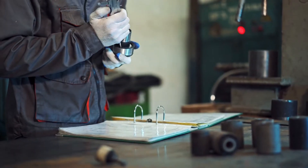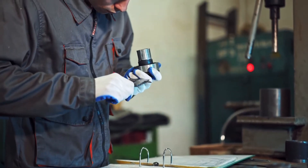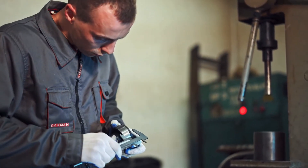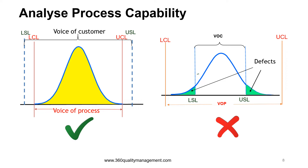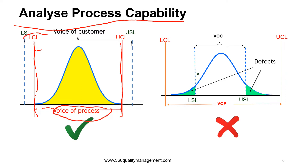We shall start by looking at process capability studies for variable or continuous process parameters to understand the fundamentals. This is an illustration of the concept for process capability. In this diagram, we have the voice of the process in red — the lower control limit and upper control limit — and we have the voice of the customer represented by the lower spec limit (LSL) and upper spec limit (USL).